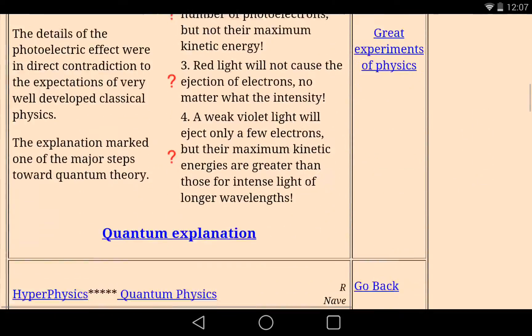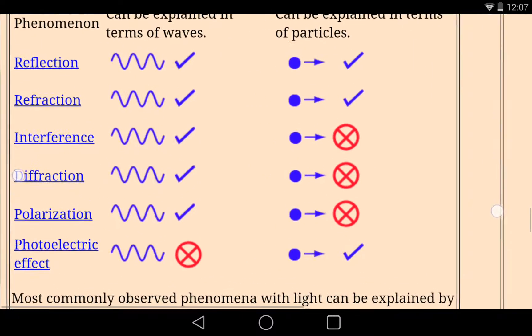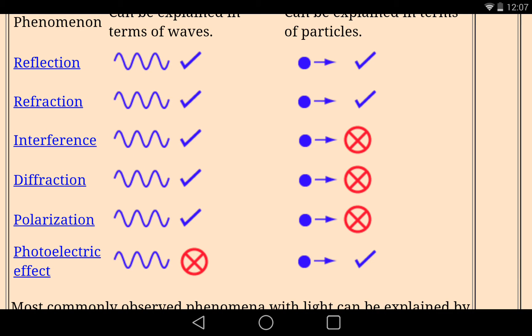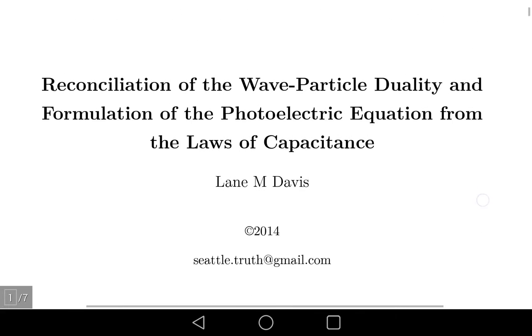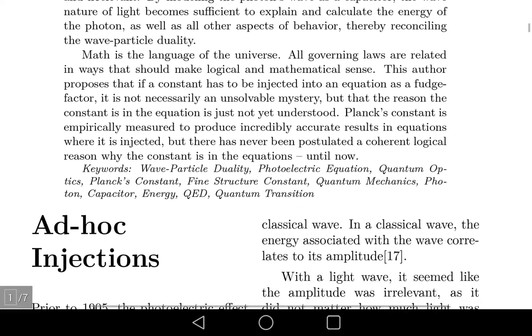It says that the photoelectric effect shows the particle properties of light, and everything else shows the wave properties of light. Here's a checklist, for instance. Reflection, can we explain in terms of wave? Check. Refraction, in terms of wave? Check. Interference, in terms of wave? Check. Diffraction, in terms of wave? Check. Polarization, in terms of wave? Check. Photoelectric effect, in terms of wave? That's the only thing that can't be explained in terms of wave. Oh wait, what do you think this paper's about? It's showing how the photoelectric effect can be explained simply in terms of waves.